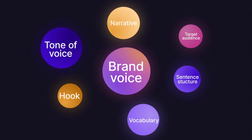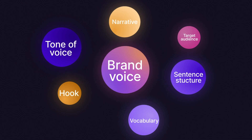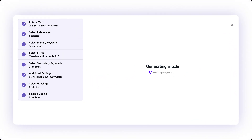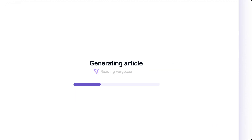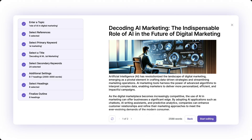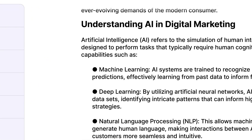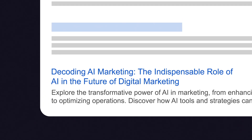With WriteSonic, your content resonates with your brand's unique style and voice. In under two minutes, create concise blog posts or in-depth reports and articles, all SEO-optimized, ready to impress your customers and rank on Google with automated internal linking, with the option to choose article length from 500 to 5,000 words.